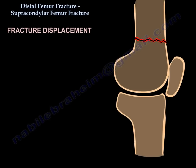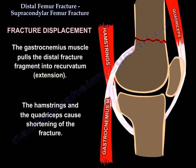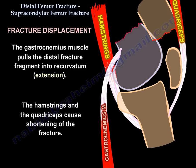Fracture displacement: the gastrocnemius muscle pulls the distal fragment into recurvatum or extension. The hamstrings and quadriceps cause shortening of the fracture.